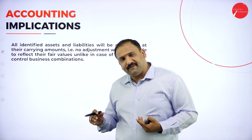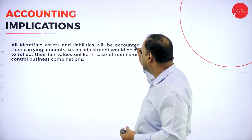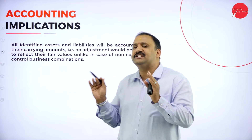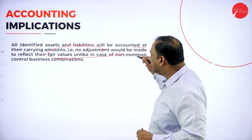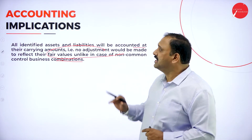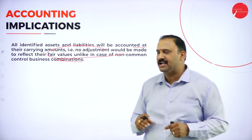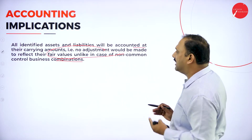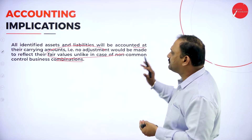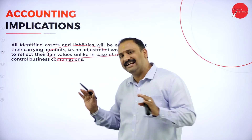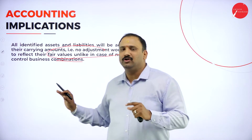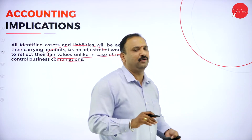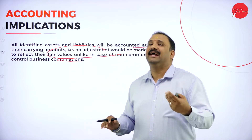All identified assets and liabilities will be accounted at their carrying amounts. No adjustment would be made to reflect their fair values in the case of a common control business. This is very important from an accounting standpoint — assets and liabilities are taken at carrying value, not fair value, unlike in the case of a non-common control business combination.